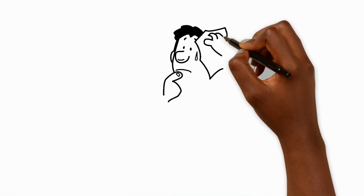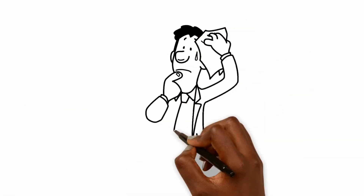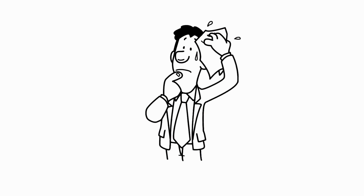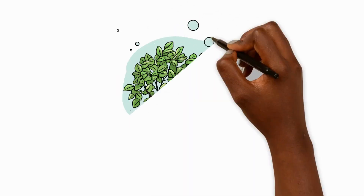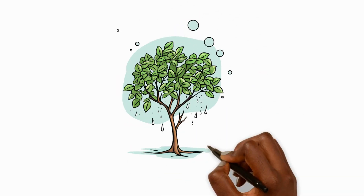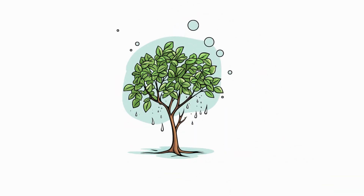Another example of evaporation is when our bodies sweat through pores in the skin when we get hot. As the sweat evaporates off our skin surface it cools our bodies down. Finally, plants lose water through pores in their leaves as water vapour.